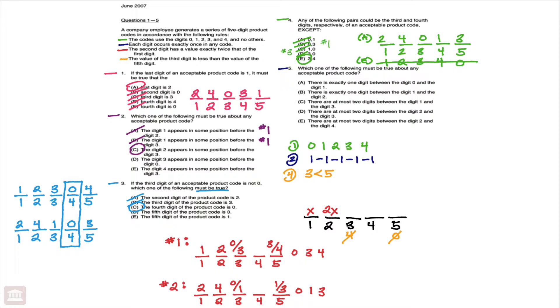A, there is exactly one digit between the zero and the one. Well, again, looking at our free hypothetical that we just drew out from question number four, you notice that there are no digits between the zero and the one, so A does not have to be true, and A would be eliminated.